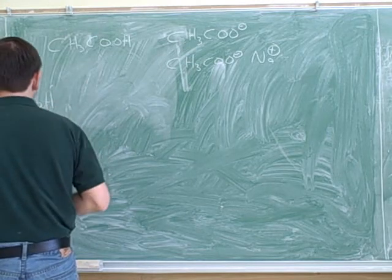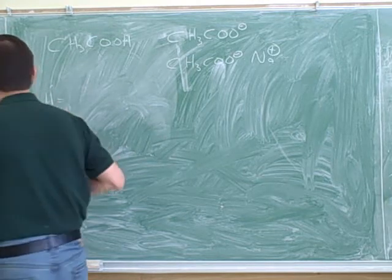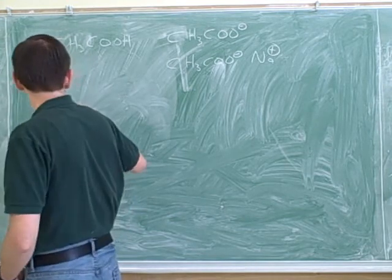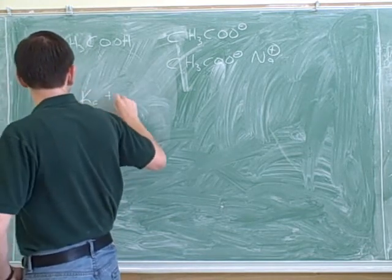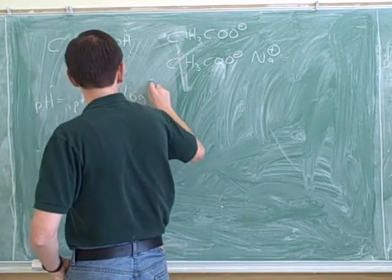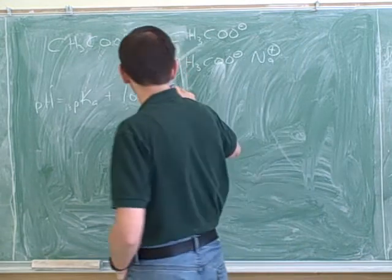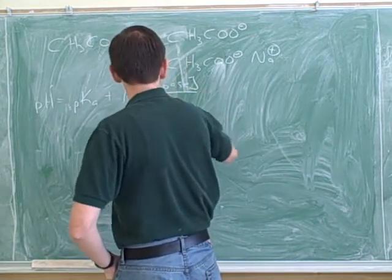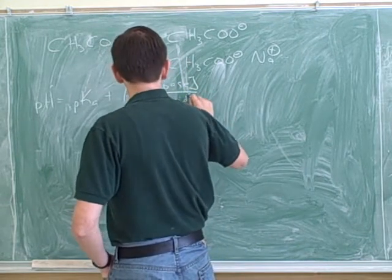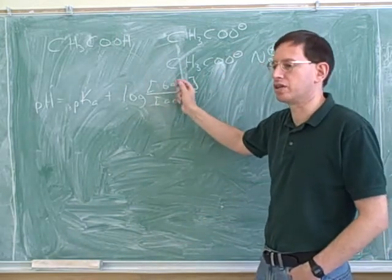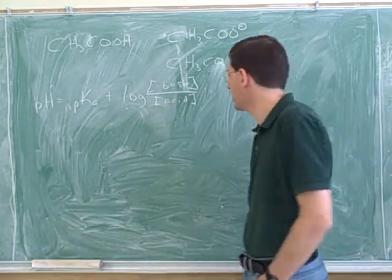And it looks like you're already remembering the Henderson-Hasselbalch equation. Well, what is the Henderson-Hasselbalch equation? What does that tell us? pH is equal to pKa plus log of conjugate base over acid. That's right. We want to put these in brackets because we're putting in the concentration of the base and the concentration of the acid here.